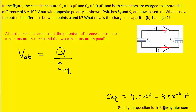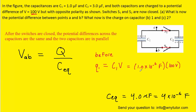We now have an expression for C_EQ, the equivalent capacitance. We need an expression for the total charge across both capacitors. Before the switch is closed, the charge on capacitor one is the product of its capacitance times the potential difference, which was given as 100 volts. Using the standard value of farads for the capacitance, the charge on capacitor one is 1 times 10 to the minus 4 coulombs.